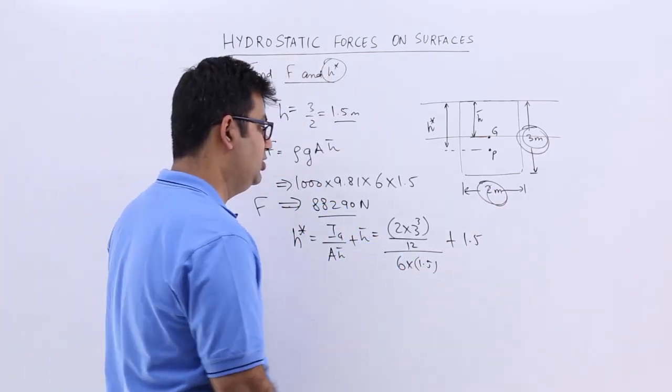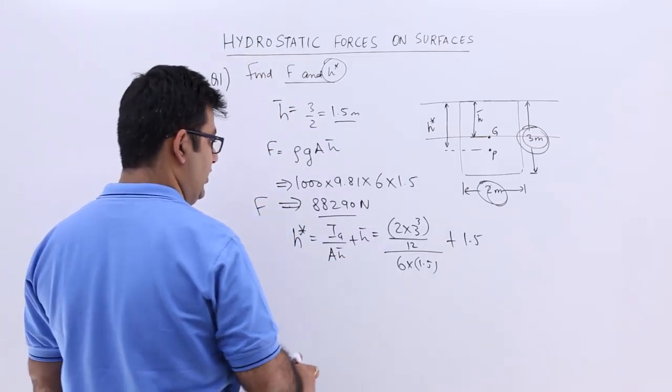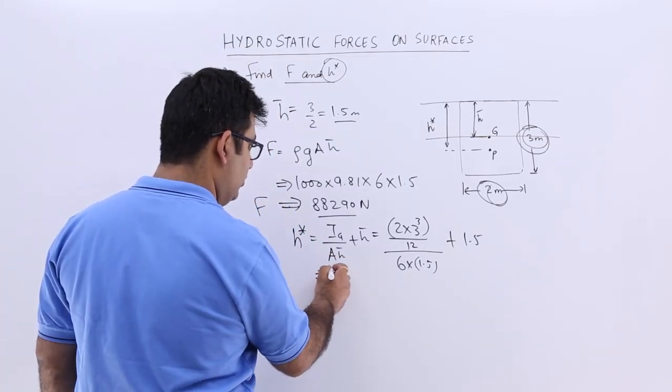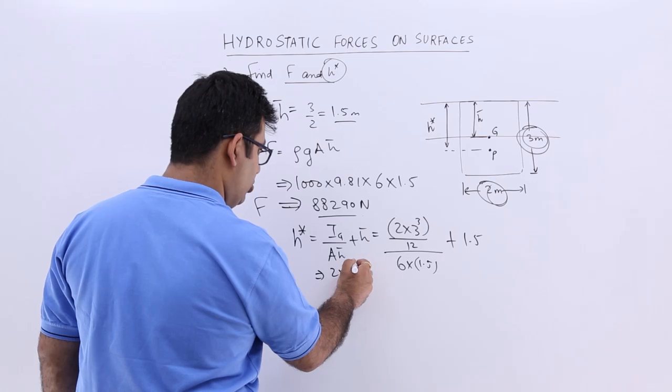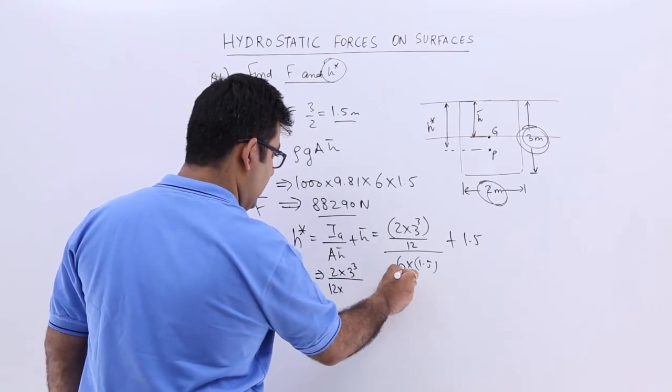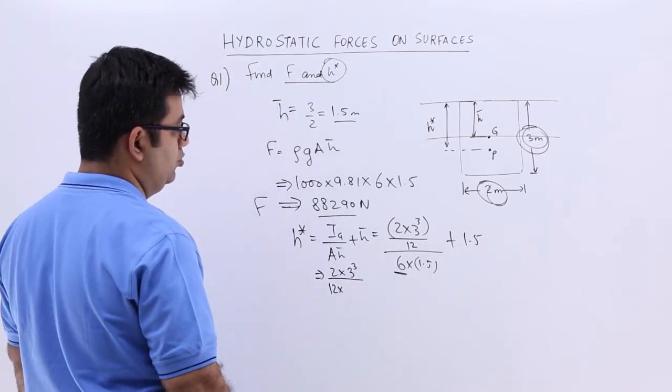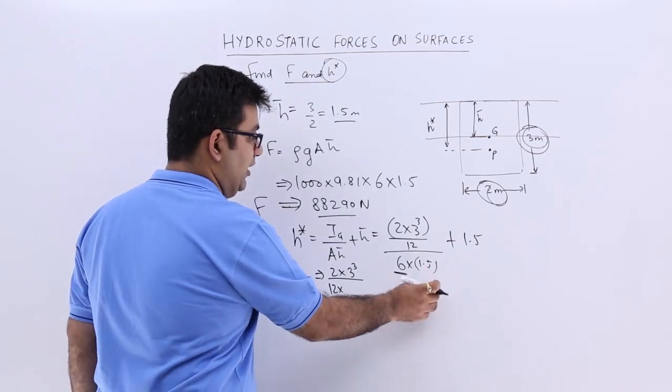You will have 2 into 3³ upon 12 upon area into h bar which is 1.5 plus 1.5. So when you solve this, you get 2 into 3³ upon 12 into, I can break it up into, this will be 3 by 2,